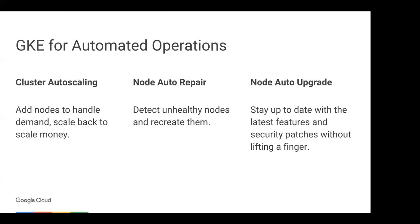GKE has a lot of really cool features. I want to highlight three related to automated operations. First, cluster autoscaling: you don't have to worry about allocating resources. When you schedule a workload and there aren't enough resources, GKE can automatically provision and attach nodes for you. Conversely, if you scale back your workloads, GKE can remove those extra nodes so you're saving money. Second, node auto repair: this constantly monitors nodes attached to your cluster and if it detects unhealthy conditions, it removes and replaces them with healthy nodes.